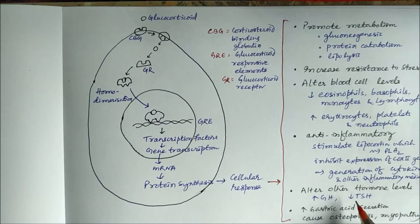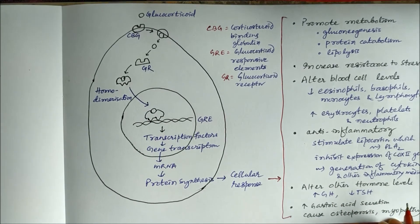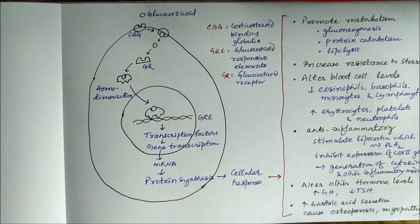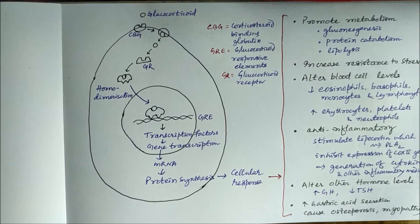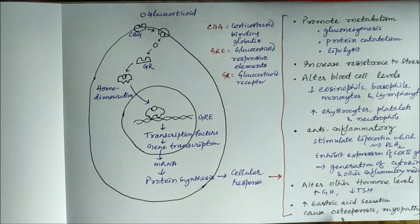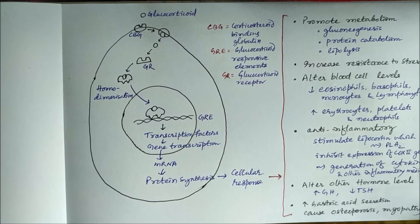Corticosteroids also alter other hormone levels: they increase growth hormone and decrease thyroid stimulating hormone. They increase gastric acid secretion, so long-term use can produce peptic ulcer. They also cause osteoporosis and myopathy, which are among their side effects.